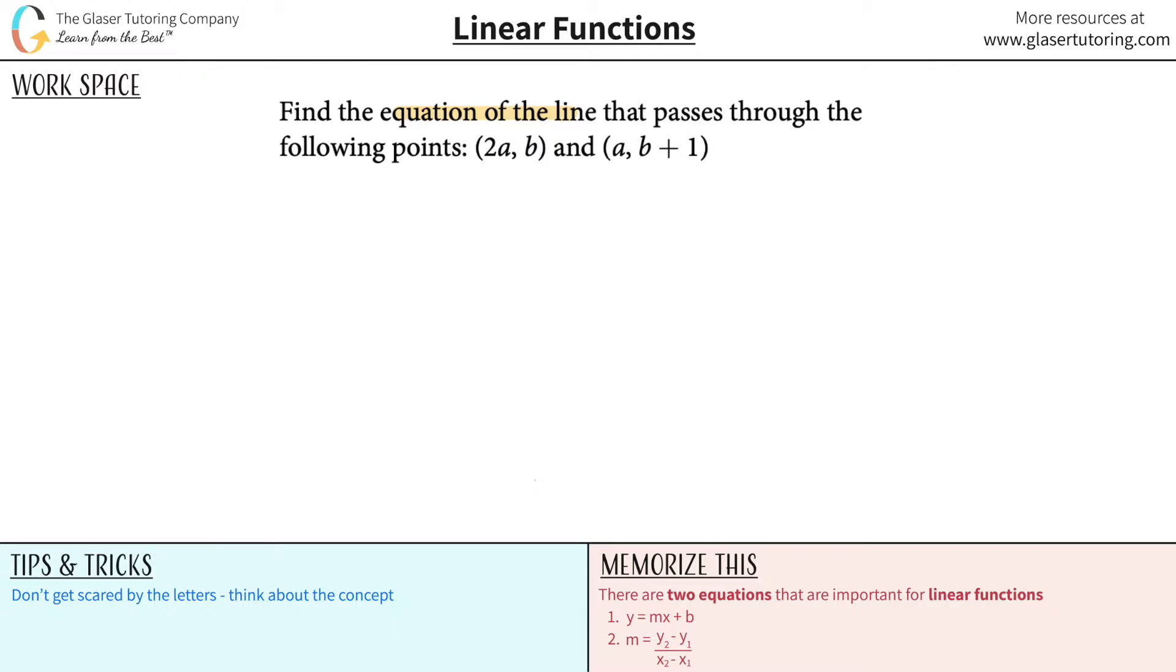Find the equation of the line that passes through the following points: 2a, b and a, b plus 1. All right, now again, the hesitation with something like this is going to be that it's like, oh man, what? They're giving me letters, right? I'm going to find an equation with letters.